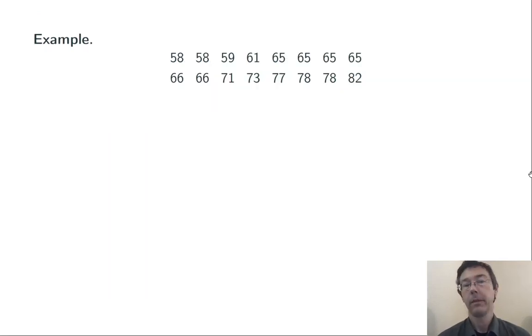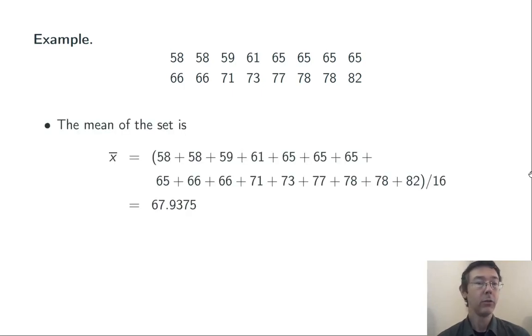Here's an example. I have a data set with 16 values in it. The mean is going to be the sum of all those values divided by 16. Here, 67.9375. Notice the notation, x̄, x with a line over it. This is common notation for the mean of a sample.